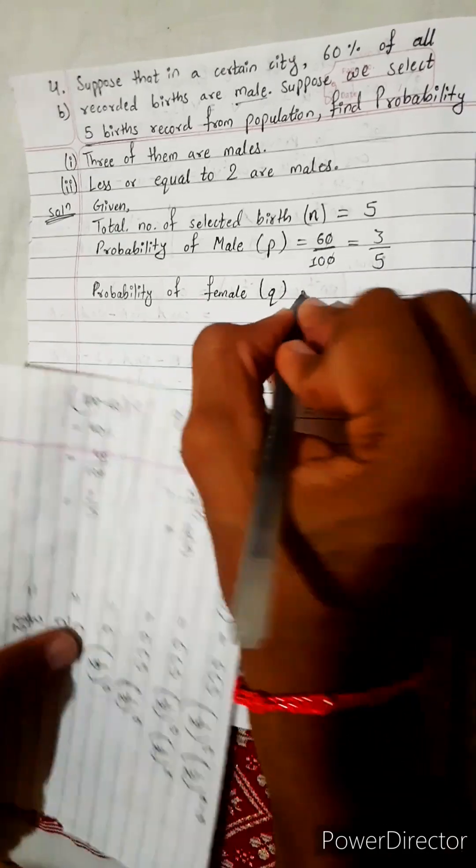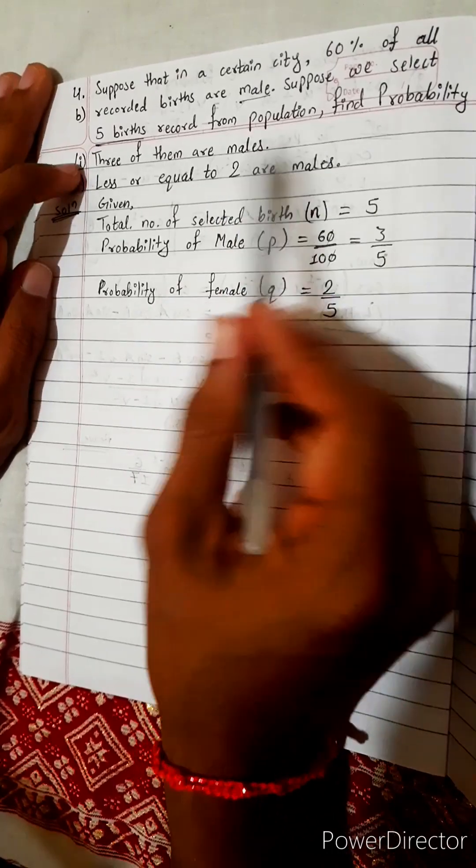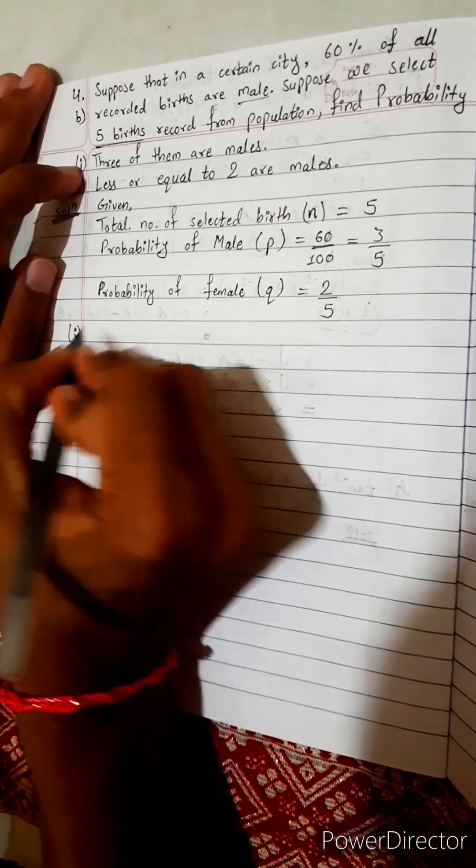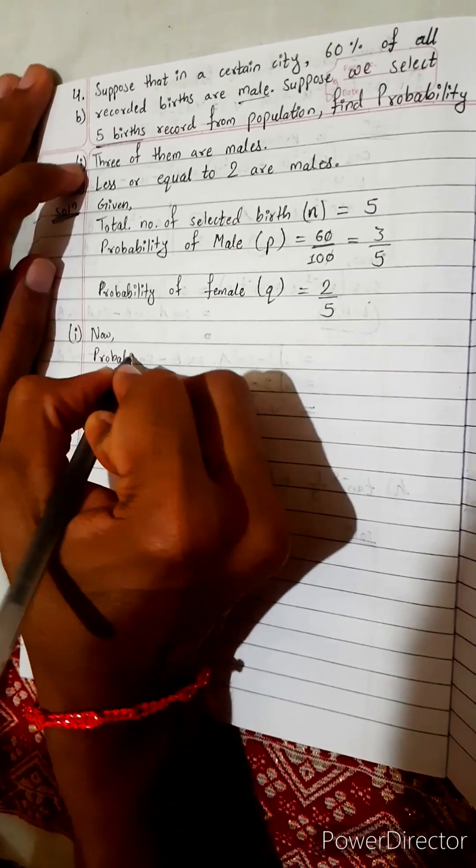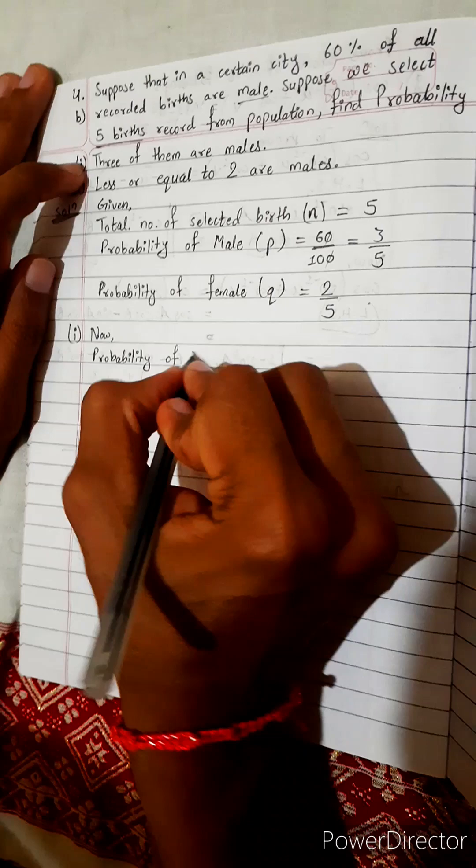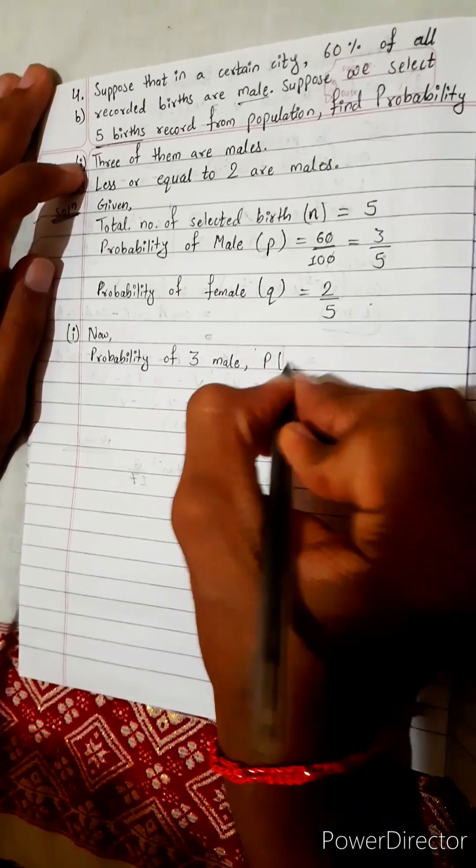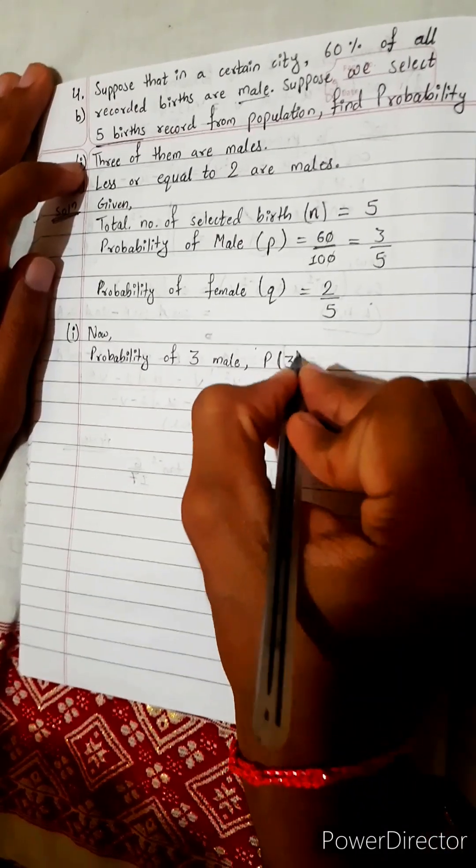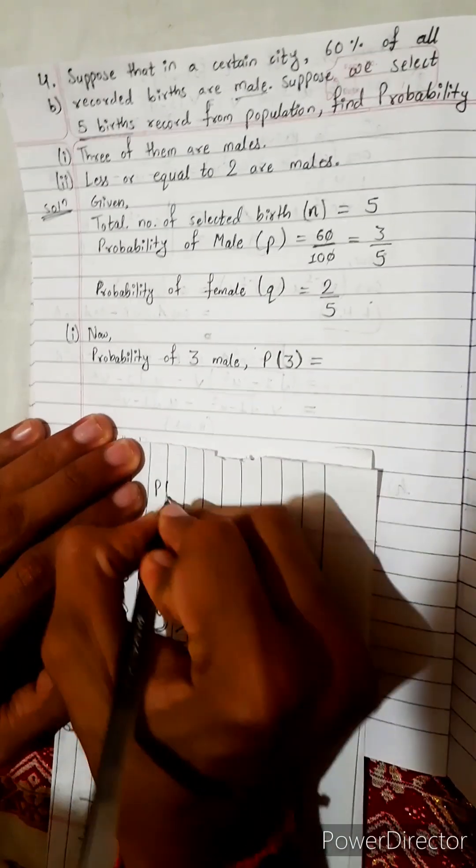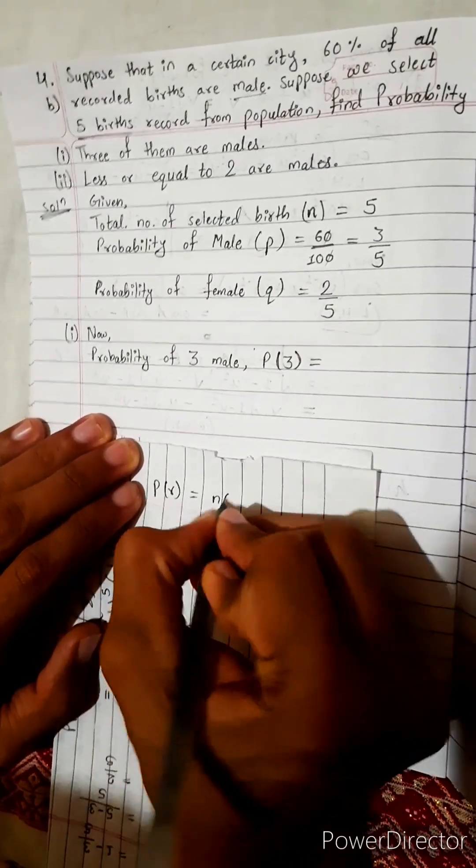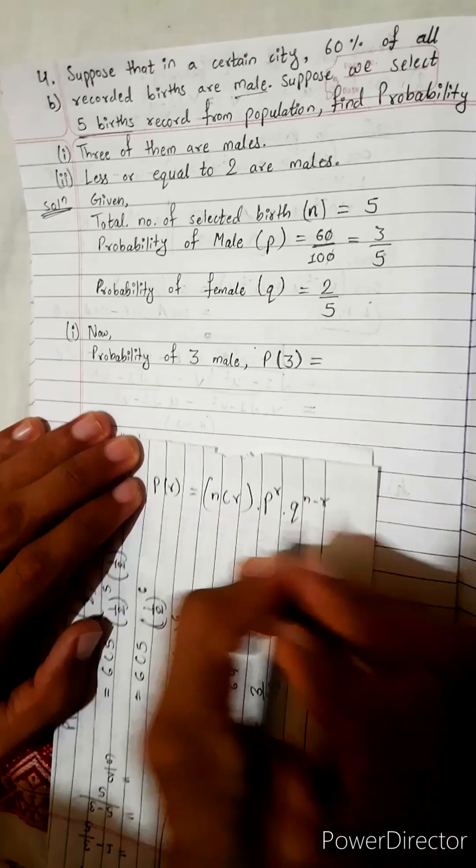Without thinking, no need to think. We celebrate, now find probability. Directly find probability, don't think more. Now probability of three males, let's represent this by P(3). P(3) equals... Do you know the formula? You must know one formula: P(r) equals nCr multiply with p power r and q power n minus r.